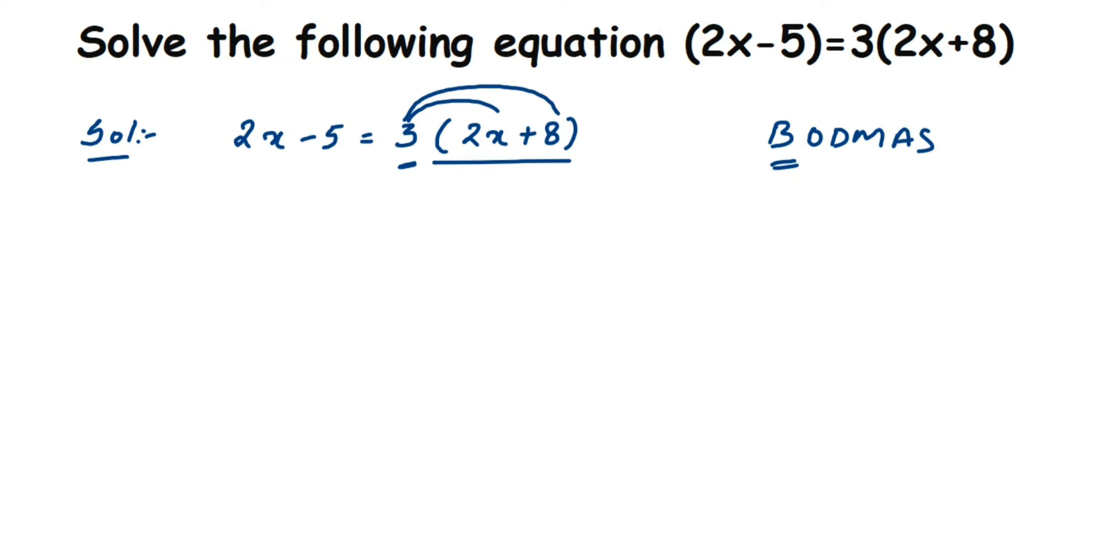That is, I'm going to multiply 3 with this 2x and also with 8. So this will be equal to 2x minus 5 equals 3 times 2x is 6x (because 3 times 2x is 6, then place the variable) plus 3 times 8 is 24. So 3 eights are 24.